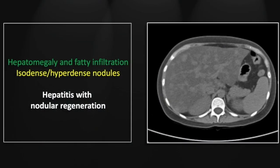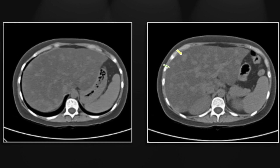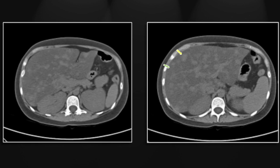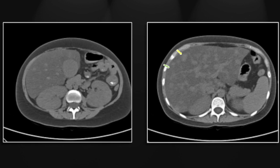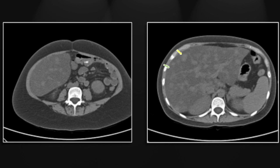Our next case is hepatitis with nodular regeneration. You can certainly appreciate the hepatomegaly as well as the extensive and pronounced fatty infiltration. There are also numerous isodense and hyperdense nodules throughout the liver, consistent with nodular regeneration. You can see the marked fatty infiltration and the massive enlargement of the liver, which extends well down into the pelvis.